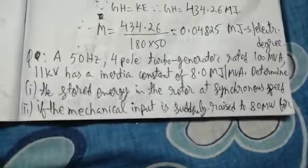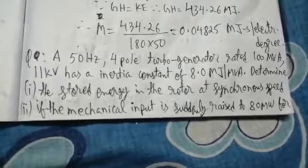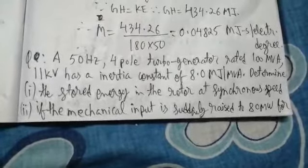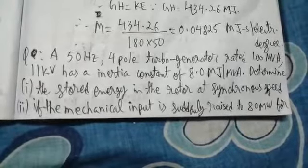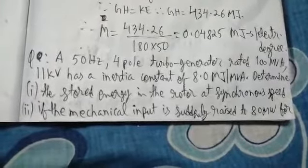Hello students, myself Joabandabad here. Today we are going to discuss another numerical in power system stability. So let us look at the numerical. There is a 50 Hertz, 4-pole turbo generator which is rated at 100 MVA, 11 kV.